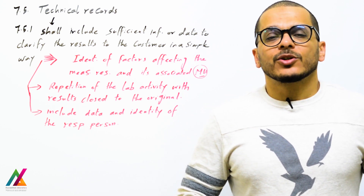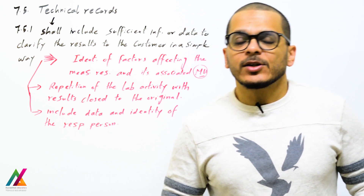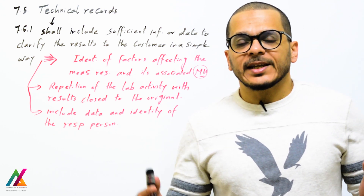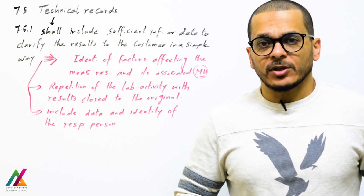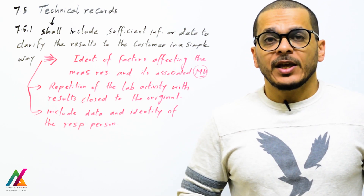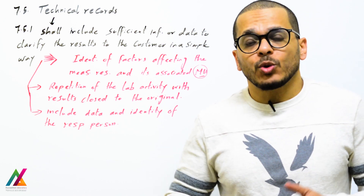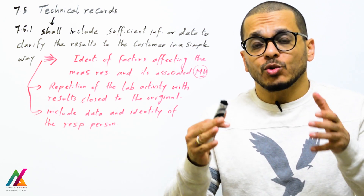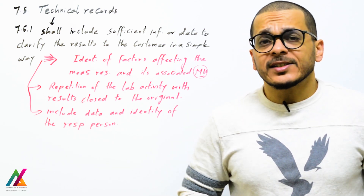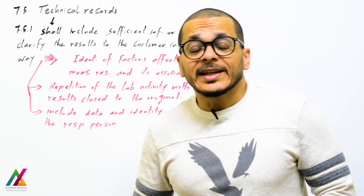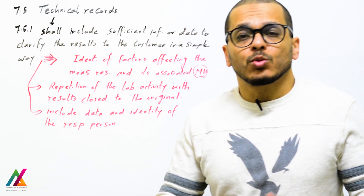Welcome back with a new lecture on ISO IEC 17025-2017 edition and technical records. Technical records are the records you should have to prove the results to the customer and give them confidence. If the customer has any complaint about the results or requests any clarification, you will have all information or data to clarify this in a simple way — to prove that your results are valid.